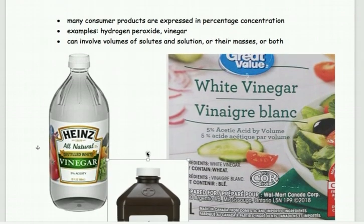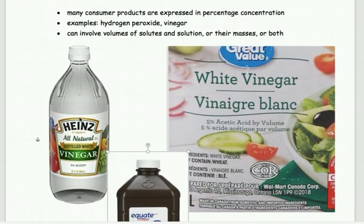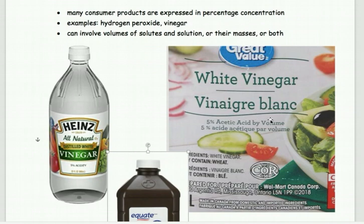Another example is vinegar, which says 5% acetic acid. Acetic acid is the classical name for vinegar. So if the vinegar was 100 milliliters total, 5 milliliters of that sample would be acetic acid — they dump it in, mix it up, and make the vinegar.